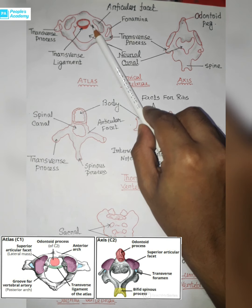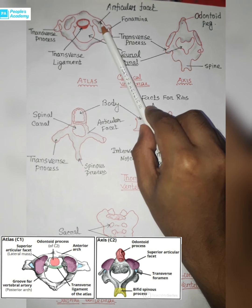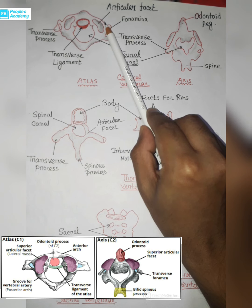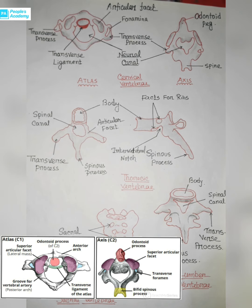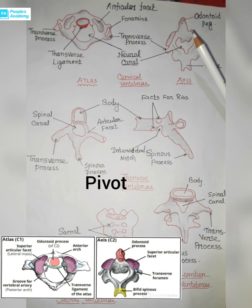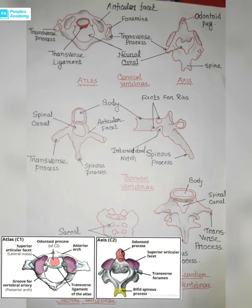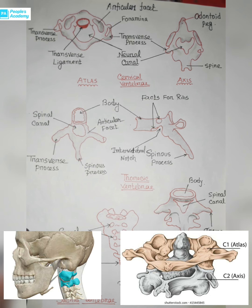Kidney-shaped facets are present on the upper surface of the atlas, which help in articulation with the condyles of the occipital bone. Coming to the axis: it is the pivot on which the atlas turns while rotary movement of the head occurs.